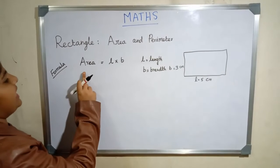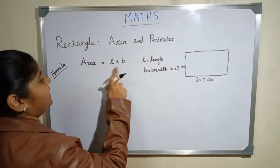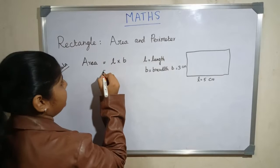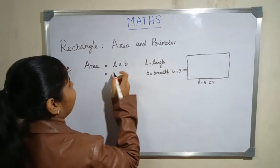The formula for area of a rectangle is length times breadth. So length is 5 centimeters.